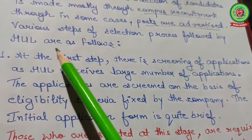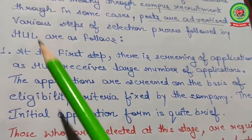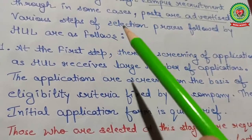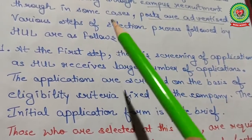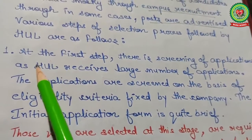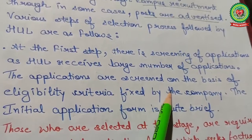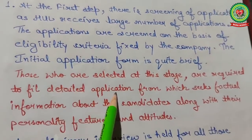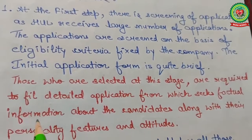The various steps of the selection process followed by HUL are as follows. Step one is screening — HUL receives a large number of applications which are screened on the basis of eligibility criteria fixed by the company. For example, if B.Tech is required but a candidate has a different degree, they do not match the criteria and their application is rejected. The initial application form is quite brief.